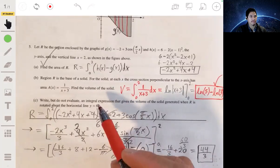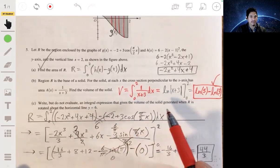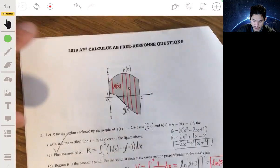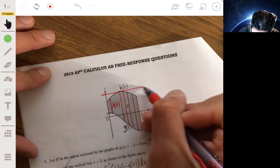Alright, in part C, write but do not evaluate an integral expression that gives the volume of the solid generated when R is rotated about the horizontal line y equals 6. Okay, so we're going to rotate about this line, this one, this will be the line y equals 6.